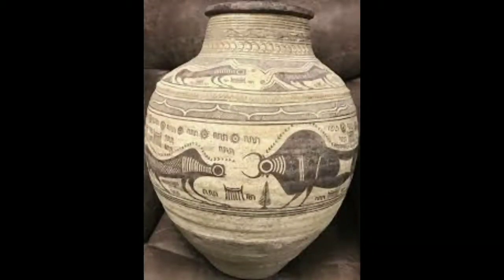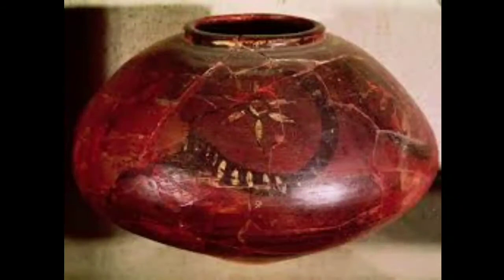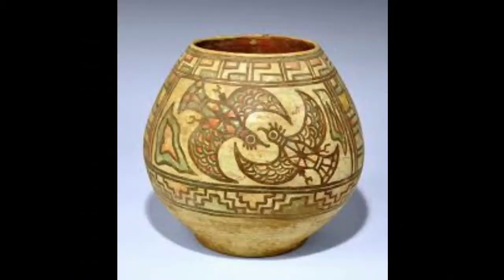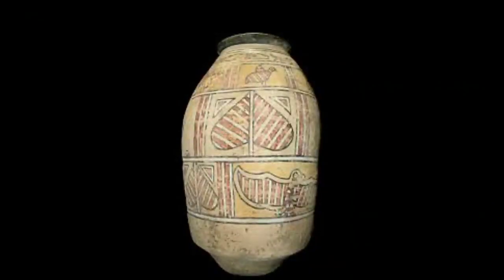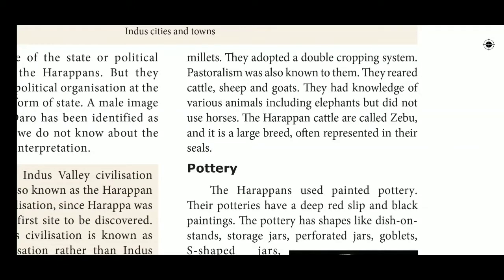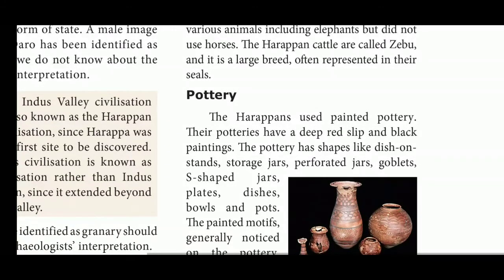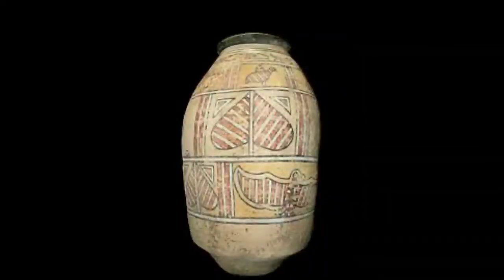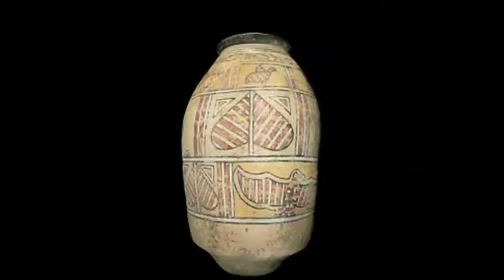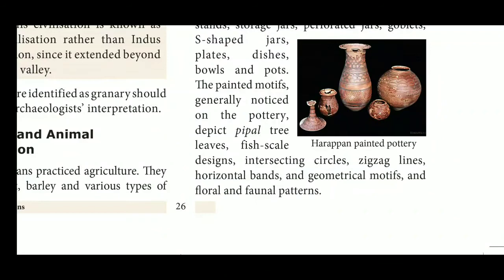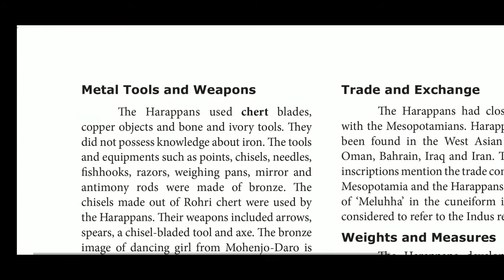The Harappans used painted pottery with a deep red slip and black paintings — that is, they used black-on-red pottery. The pottery shapes include dish-on-stands, storage jars, perforated jars, goblets, S-shaped jars, plates, dishes, bowls, and pots. The painted motifs generally noticed on the potteries depict peepal tree leaves, fish scale design, intersecting circles, zigzag lines, horizontal bands, geometrical motifs, and floral and faunal patterns. Most of the potteries depict peepal tree leaves.